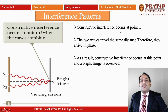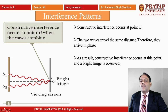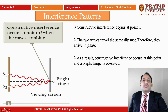Constructive interference occurs at point O. The wave from S1 travels to O and the wave from S2 also travels to O. Point O lies on the perpendicular bisector of S1 and S2, which means the length from S1 to O and the length from S2 to O are the same. When these waves reach point O, they are in the same phase and constructive interference occurs. The two waves travel the same distance, therefore they arrive in phase, and as a result a bright fringe is observed at the center.